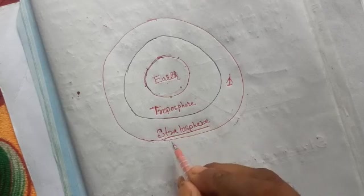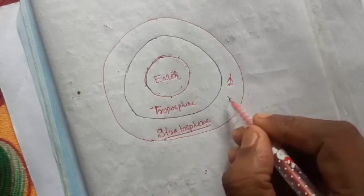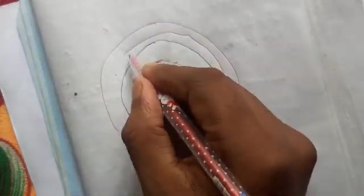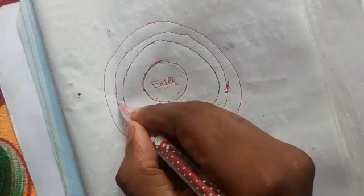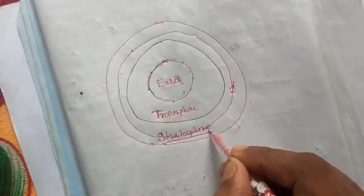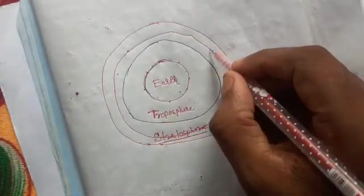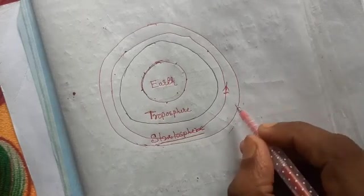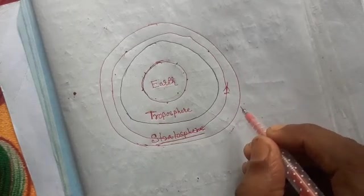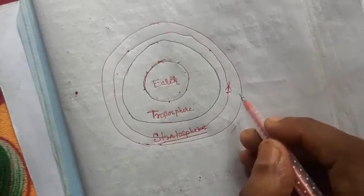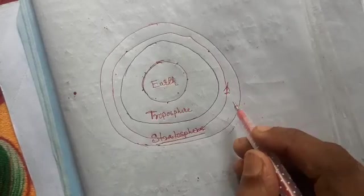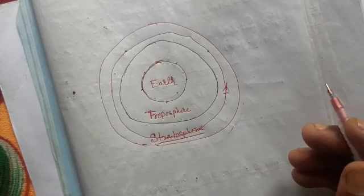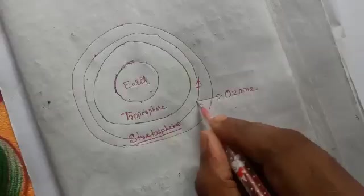Another important thing is that in the stratosphere you will find another layer, that is ozone layer. Ozone layer is very important for plants and animals in that it prevents us from ultraviolet rays, which are very dangerous rays that come from the sun which cause skin cancer for human beings.